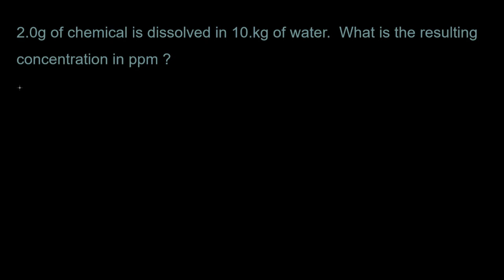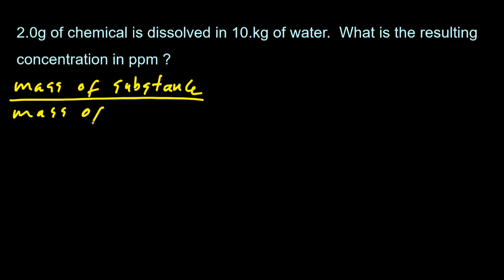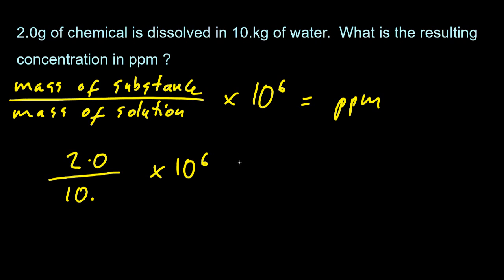So two grams of a chemical is dissolved in 10 kilograms of water. What is the resulting concentration in parts per million? So let me scribble out that equation. So the mass of the substance is two grams, 10 kilograms, and it's all gone dreadfully wrong. You've got to keep an eye on those units. Grams and kilograms, that's not going to work. Let's convert the 10 kilograms to grams by multiplying by 10 to the 3. And that gives me 200 parts per million. Well, not really, because we've got two sig figs in the question. So you're going to need two sig figs in the answer.